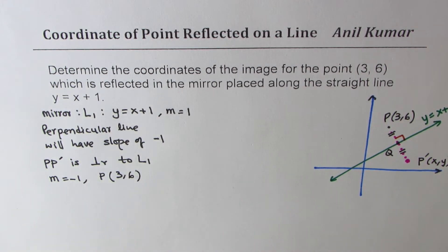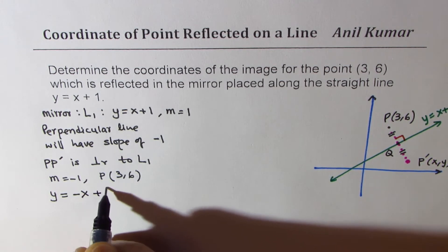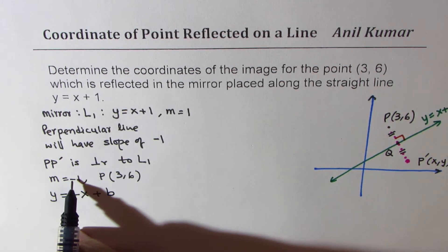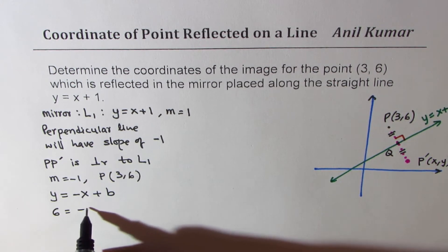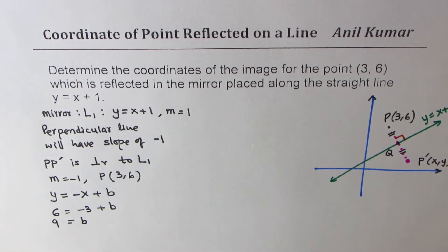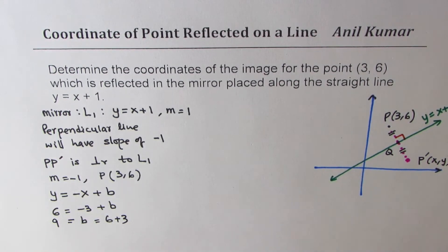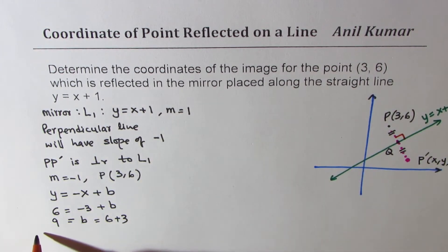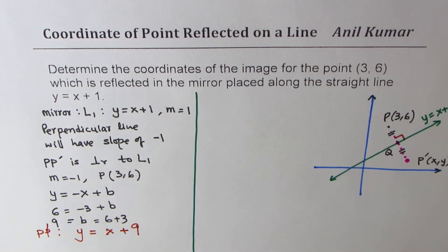With this information we can find the equation of PP'. In the form y = −x + b, we substitute x = 3 and y = 6: we get 6 = −3 + b, which gives b = 9. Therefore the equation of line PP' is y = −x + 9.